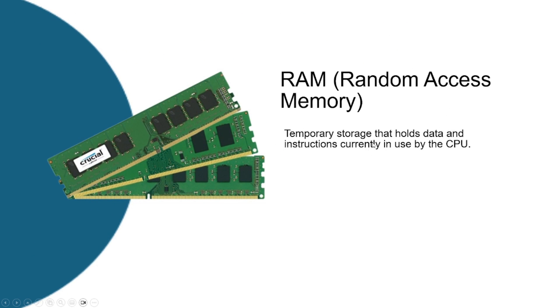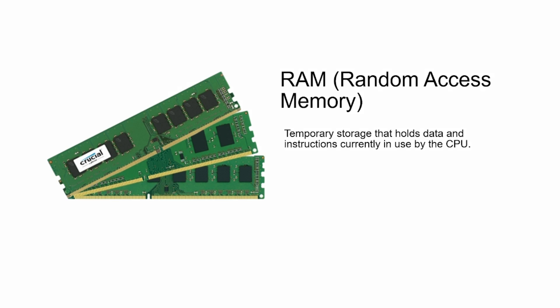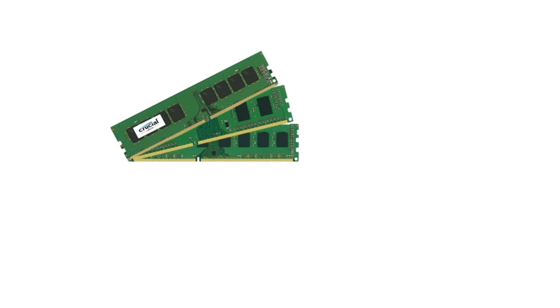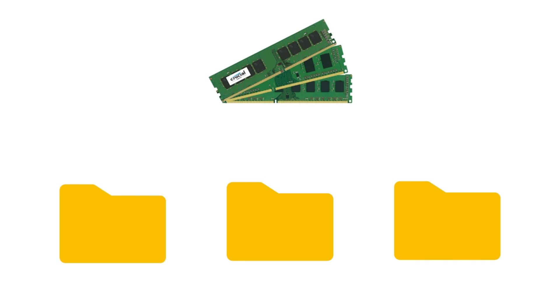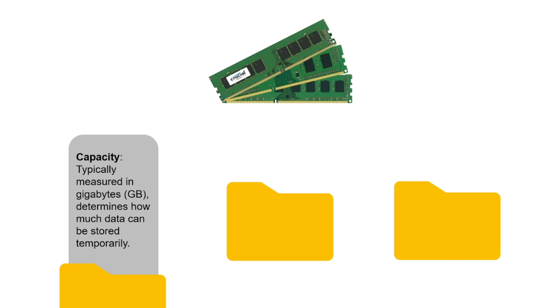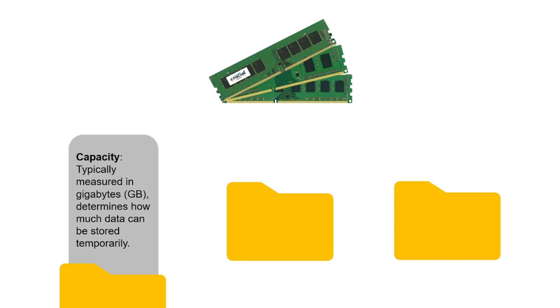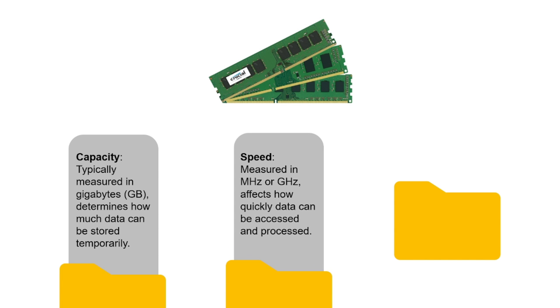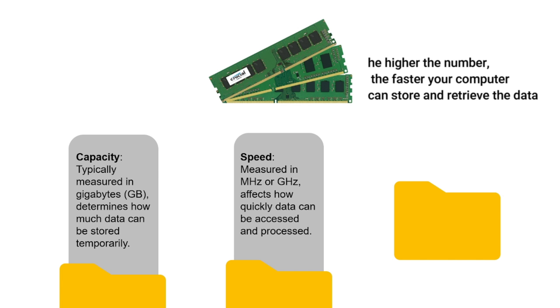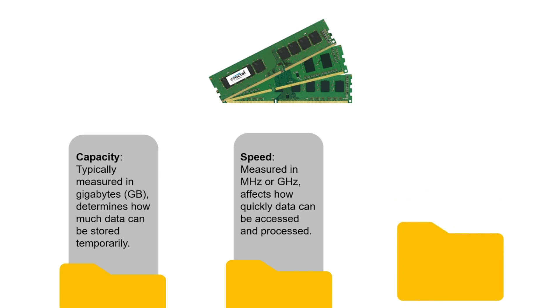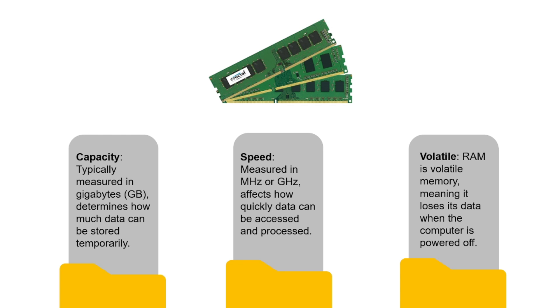Now let's move on to RAM, or random access memory. RAM is short-term memory — it's where data is stored that your computer processor needs to run your applications and open your files. Key characteristics of RAM include: first, capacity, typically measured in gigabytes, which determines how much data can be stored temporarily. The higher the capacity, the more data can be stored by applications. Next is speed, which affects how quickly data can be accessed and processed — the higher the number, the faster your computer can store and retrieve data. Last, RAM is volatile, meaning it loses its data when the computer is powered off.